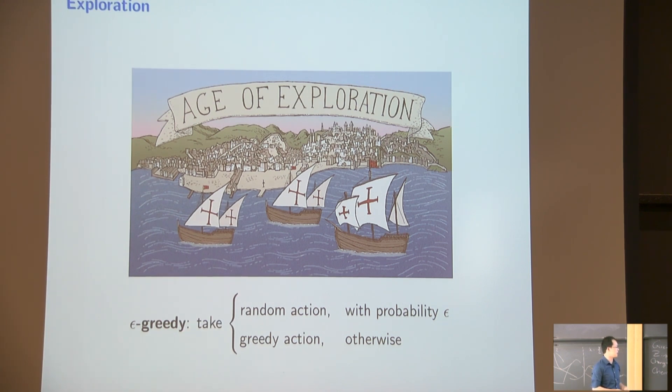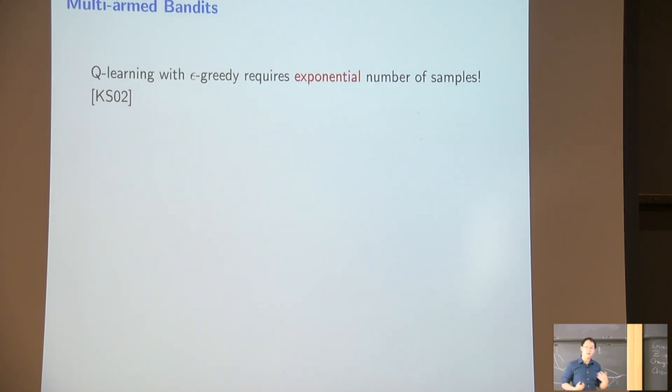A very basic exploration algorithm is called epsilon greedy. Essentially, for most of the time, you just pick the greedy action, those actions which you currently believe is the best. And with some small probability epsilon, you just take some random actions. So those random actions, although maybe they end up something random, but they give you at least some chance to visit something unknown, and they might be good. So this gave us a very basic algorithm called Q-learning epsilon greedy with epsilon greedy exploration. And this algorithm is still the textbook algorithm you would learn in the reinforcement learning class.